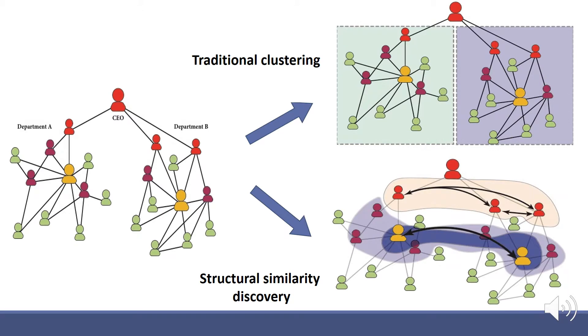Structural similarities, on the other hand, identify similar roles or functions across the network. Take the secretaries from each department for instance, denoted by yellow characters in the graph. While these secretaries might not communicate with each other, they both communicate with everyone within their department and thus share identical structural function.